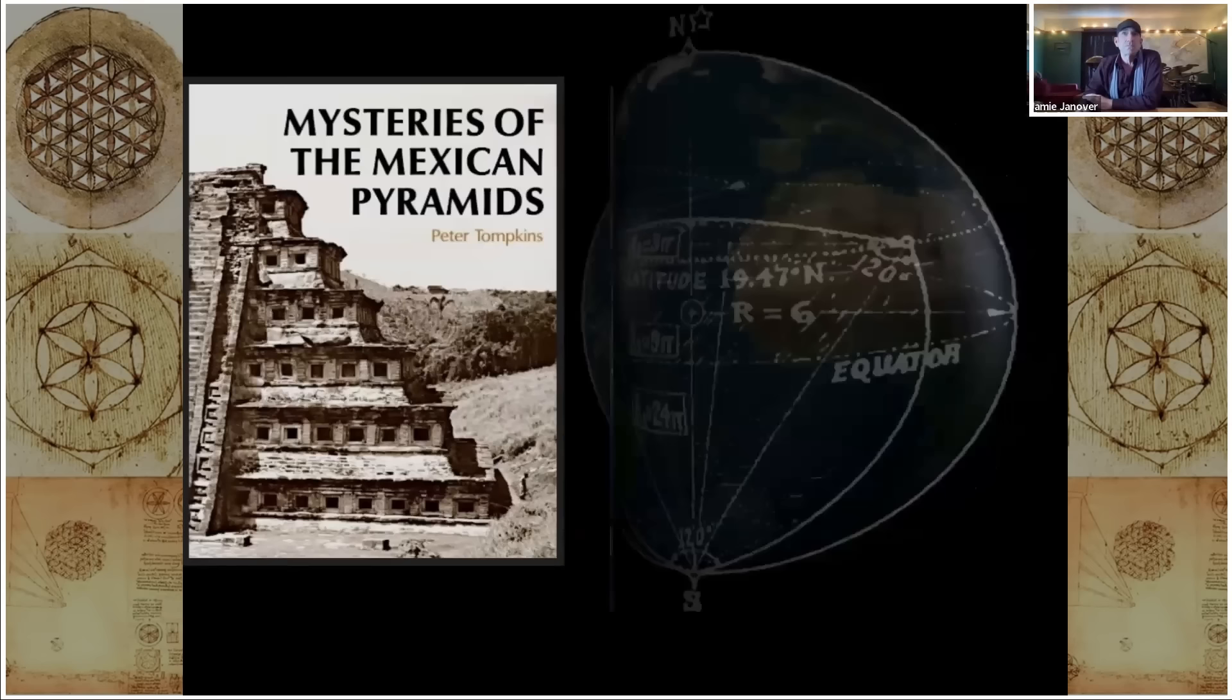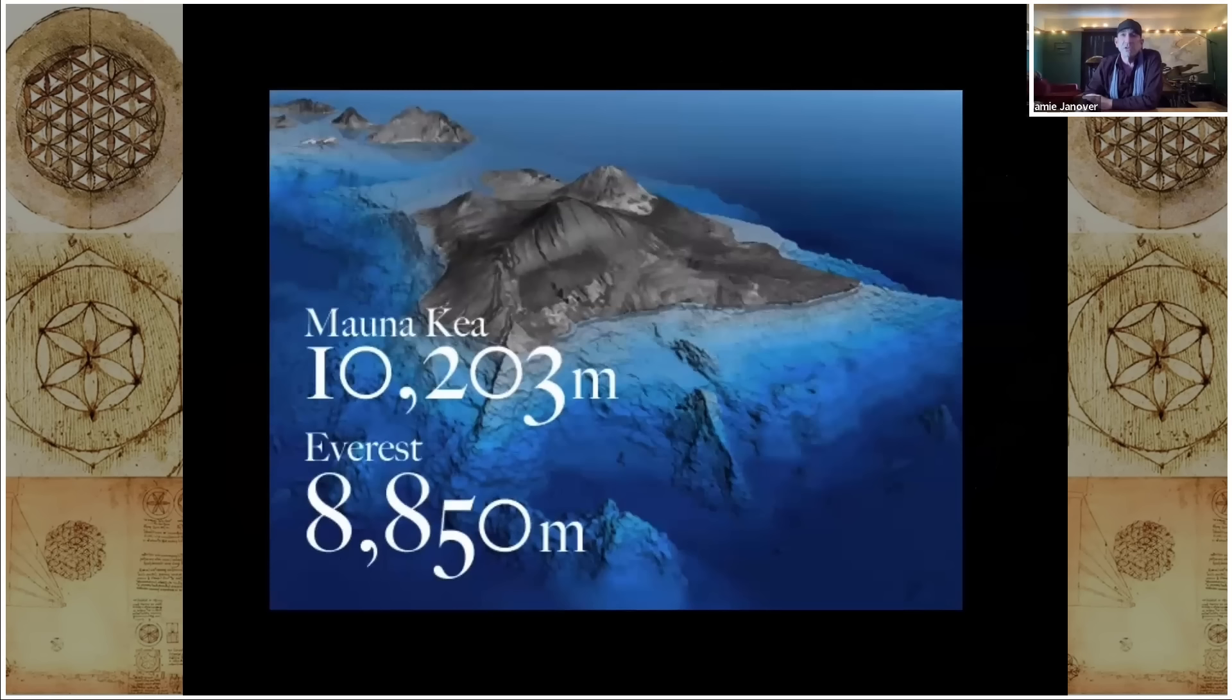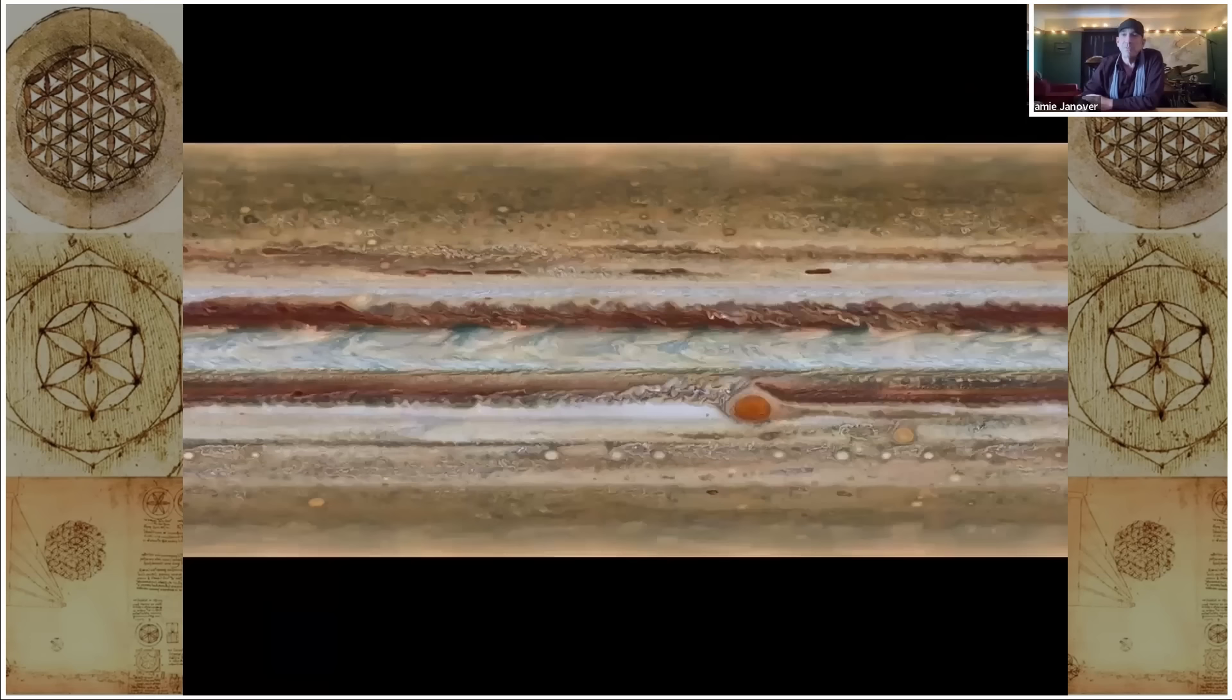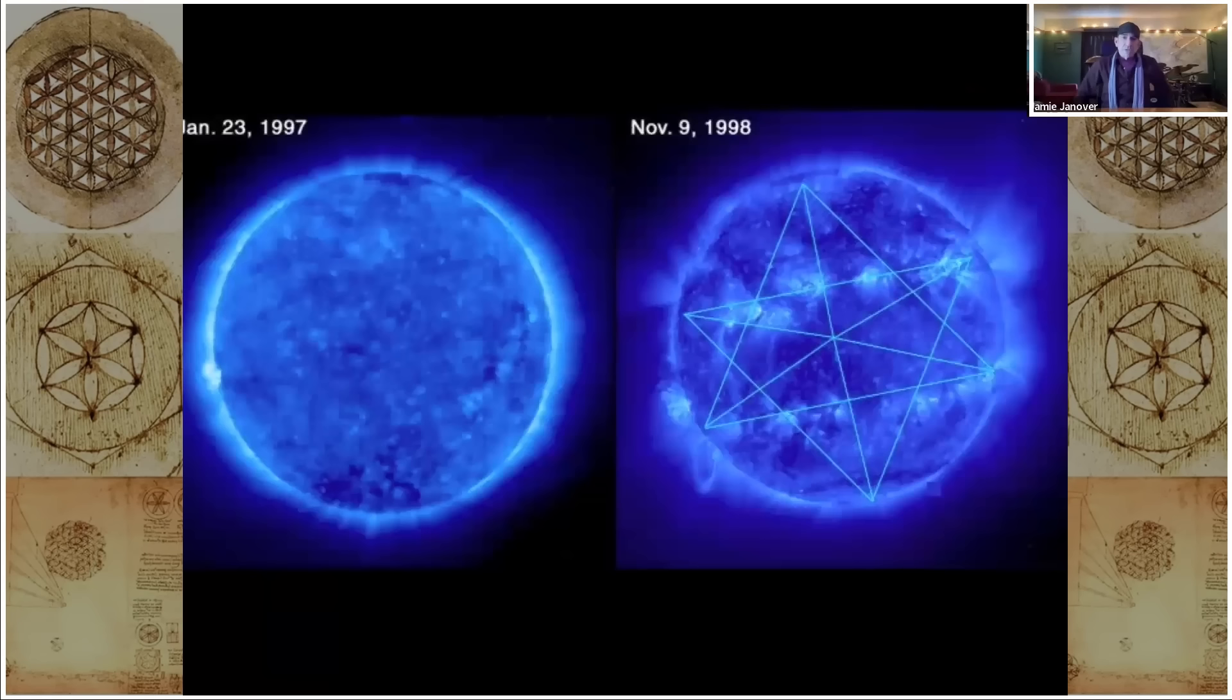And you can see that there's gigantic structures on our planet and around the solar system at 19.47, including the Big Island of Hawaii and Olympic Mons on Mars and the Great Red Spot on Jupiter, which has been there since we started looking at it when we invented the telescope around 350 years ago. The storm has just been sitting at 19.47. It doesn't move around. So even on the sun, looking at sunspot activity, you see increased sunspot activity at this latitude, north and south.